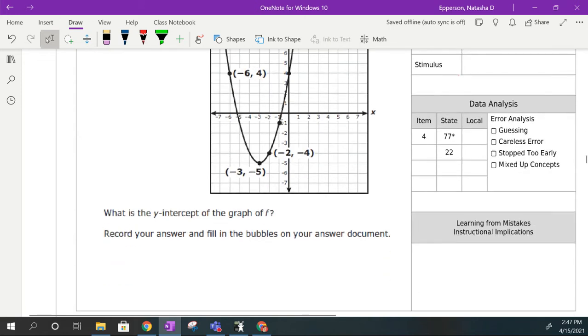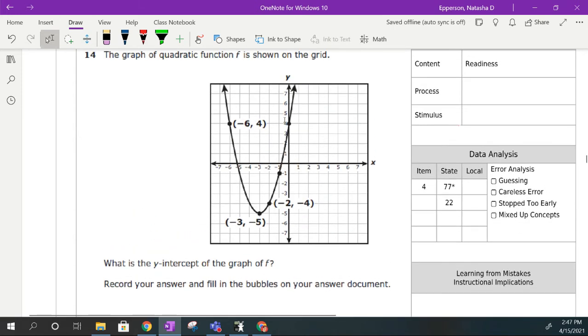Number 14, we want to know what is the y-intercept. That is when x is equal to zero. That is this coordinate point right there. We're not going to say x is equal to say, we're going to say y is equal to 4. They're wanting us to put our answer in the grid, so we would only put the number 4 in the answer document.